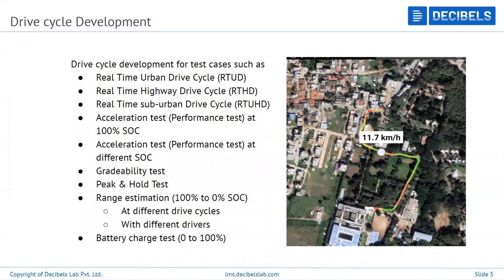Testing all traffic conditions gives you a complete idea of vehicle performance and component sizing for your prototype or final product. You also have a real-time highway drive cycle where you test on a complete highway. Suburban testing is a mix — a bit of rural areas with very low traffic along with city areas that aren't heavily congested.